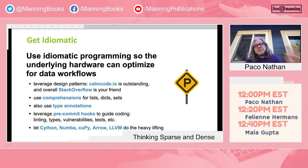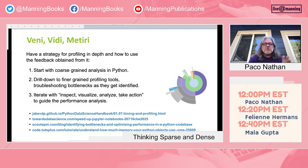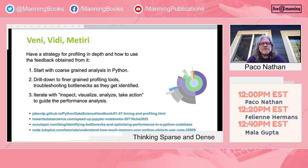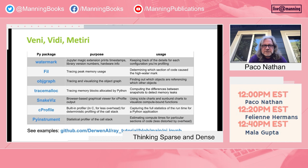Use comprehensions. Use type annotations. But more importantly, use pre-commit hooks to really enforce and encourage all of the above across teams — that's part of your CI. That allows the low-level stuff — Arrow, CuPy, Numba, Cython, and all that — to do the heavy lifting. Use idiomatic programming. Also, learn how to use profiling tools with an iterative process: start with a coarse-grain analysis in Python, look at your call stack, look at your memory objects, and then drill down as you start to identify bottlenecks. You can drill down all the way to hardware timelines. Iterate with this notion of: inspect, visualize, analyze, take action. Profiling tools I like in Python include OpsGraph, SnakeViz, and PyInstrument.